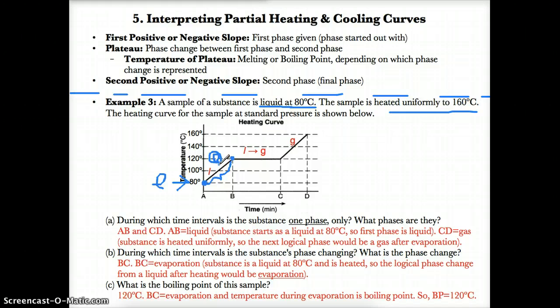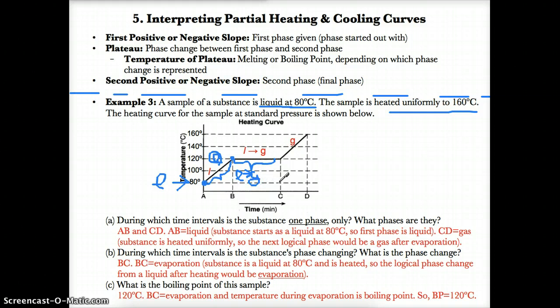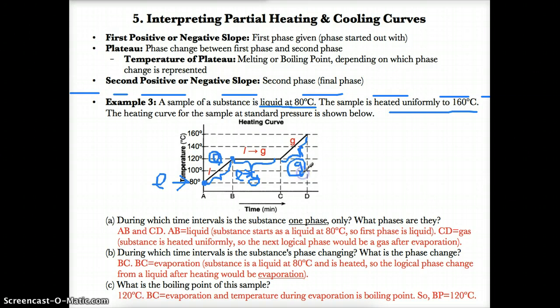Since this is a heating curve and the first phase is liquid, the phase change would logically be evaporation from liquid to gas, because you have to go forward in terms of phase changes toward a gas. So this first phase change would be liquid to gas, and the second final phase would obviously be gas, since gases are higher in temperature on a heating curve than liquids.